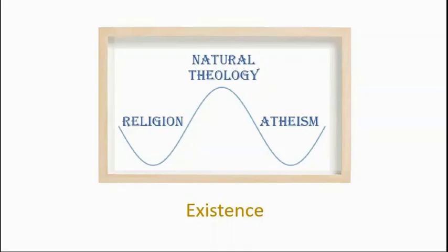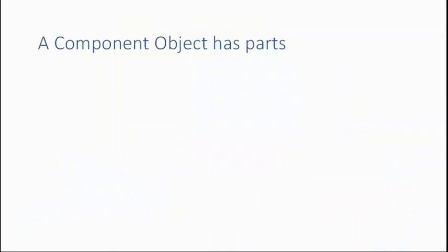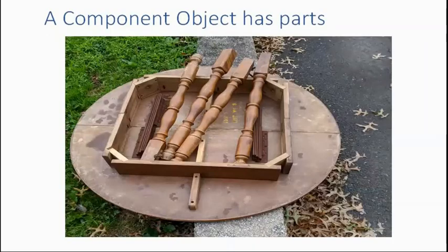So let's imagine a car or a home or a table and we'll label these objects component objects. Component because they have parts. The car has a windshield and tires, a home has a roof and a door, a table has legs and a top. They have parts. So they're component objects, component things.